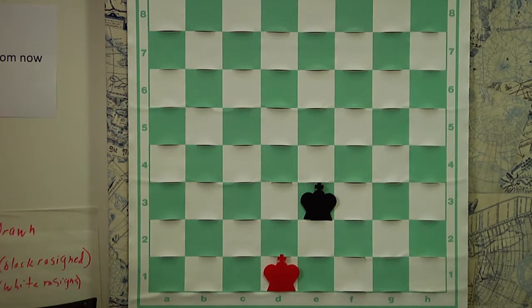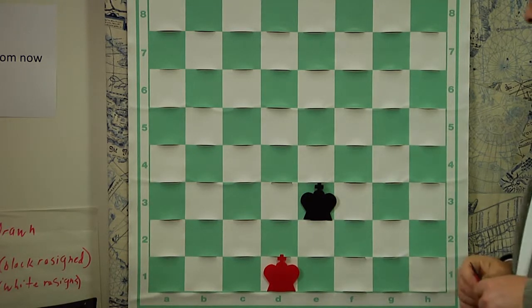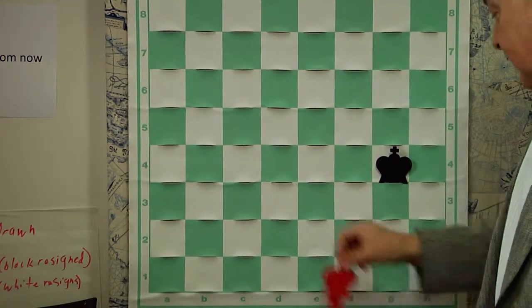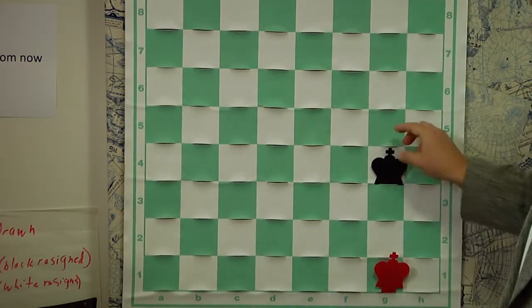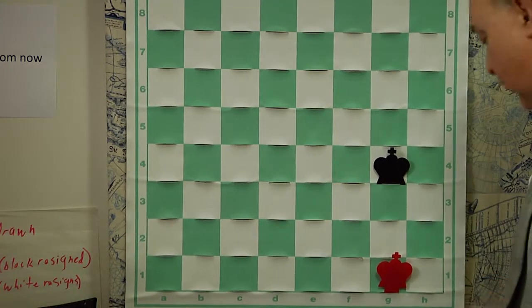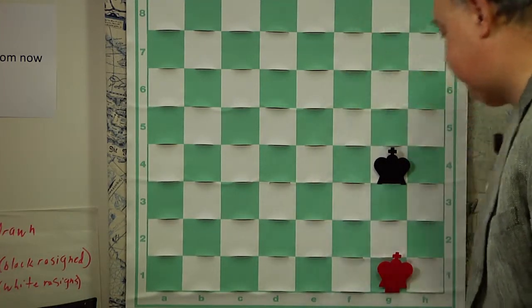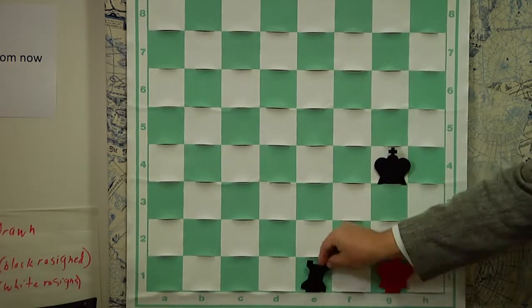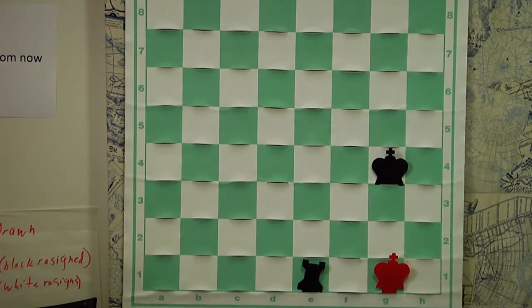And there are two other kinds of draws. One is called the threefold repetition. This will often happen in a game involving beginners where one simply does not know how to land a checkmate. And black, for example, will check. And now we've seen this position for the first time.